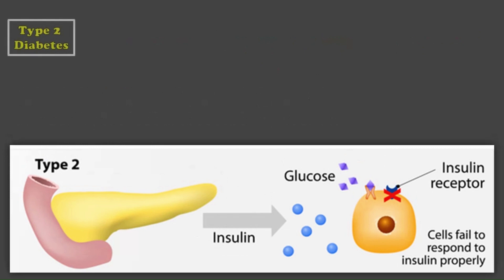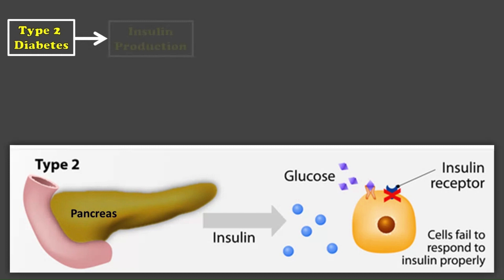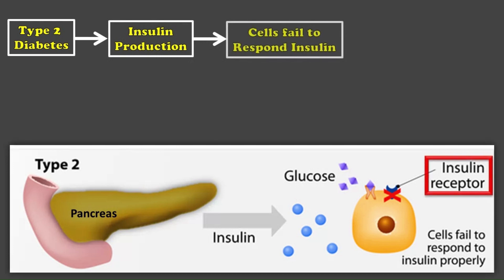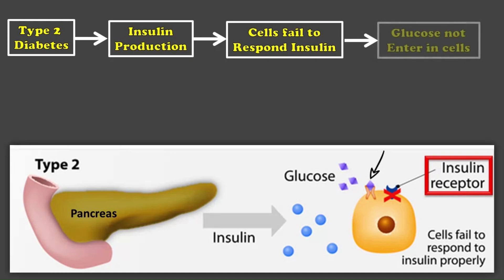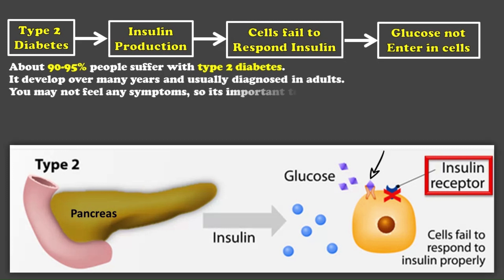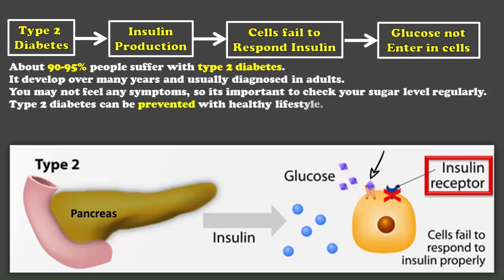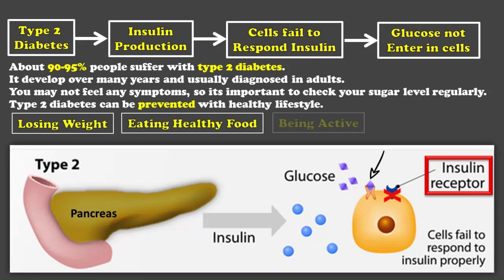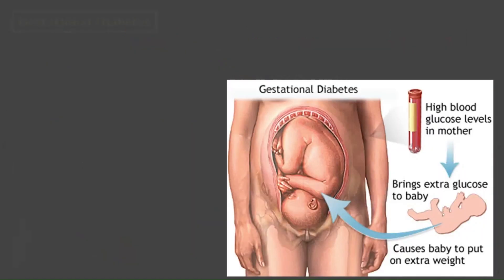If a person has type 2 diabetes, the pancreas makes insulin, but the cells cannot use the insulin that is being made, due to which glucose cannot enter the cells. About 90–95% of people are suffering from type 2 diabetes. It takes many years to affect the body and is diagnosed mostly in young adults. It does not show any special symptoms, so the amount of glucose in the blood should be checked. To avoid type 2 diabetes, it is important to keep your body weight low, eat good food, and try to be active all the time.